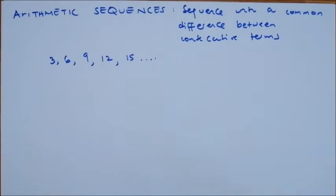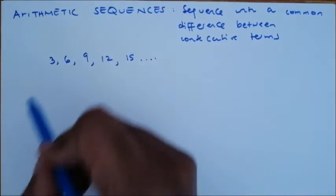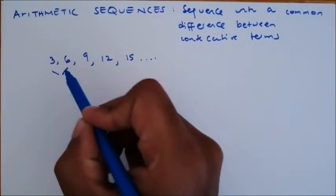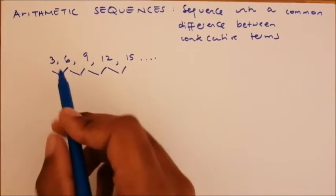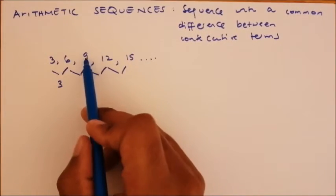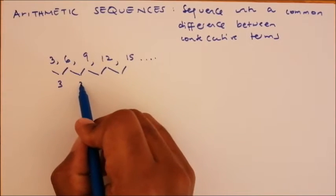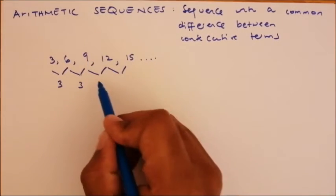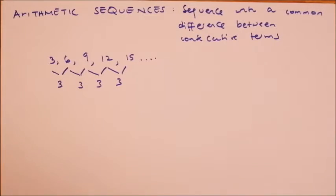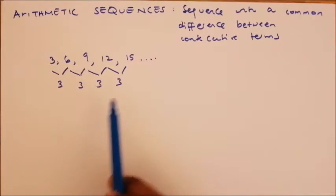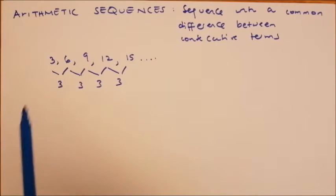If asked to determine whether a sequence is arithmetic or not, you find the common difference between terms. So: 6 minus 3 is 3, 9 minus 6 is 3, 12 minus 9 is 3, 15 minus 12 is 3. This shows we have a common difference between consecutive terms.